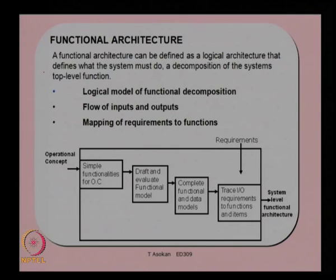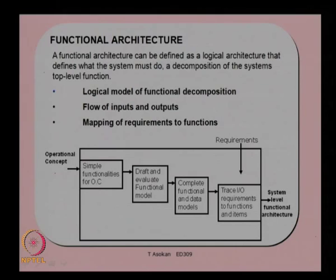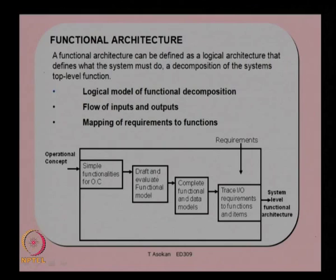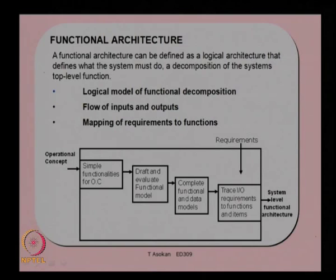The input to functional architecture development is basically the operational concept and the requirements. These two inputs give the output — the system-level functional architecture. In order to develop it, we need to define the simple functionalities for the operational concept, draft and evaluate the functional model, complete the functional and data models, and then draft the input-output requirements to functions and items.